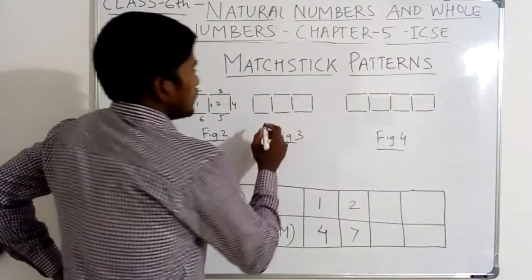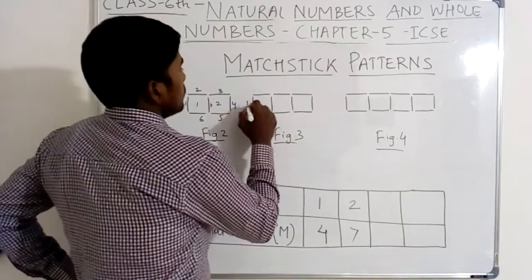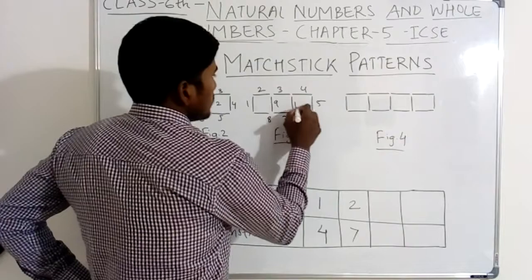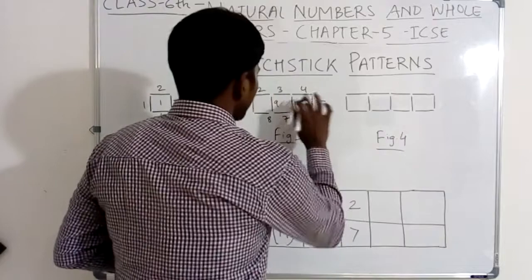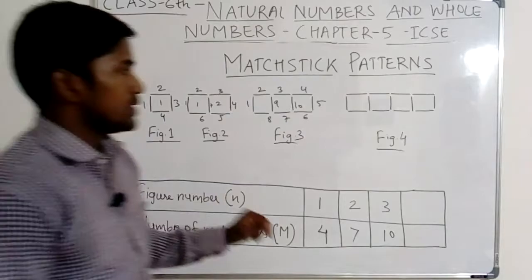In figure number 3, how many mastic are used? Let's count — one, two, three, four, five, six, seven, eight, nine, ten. Ten numbers of mastic are used in figure number 3. So figure number 3: number of mastic is ten.